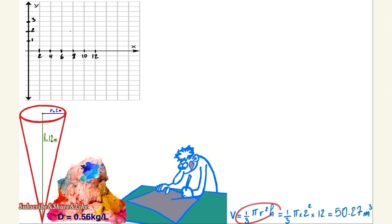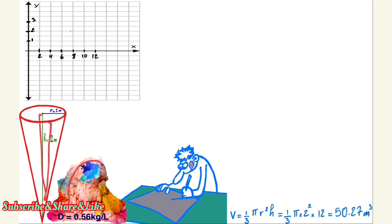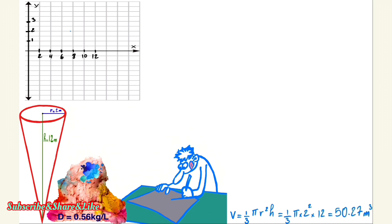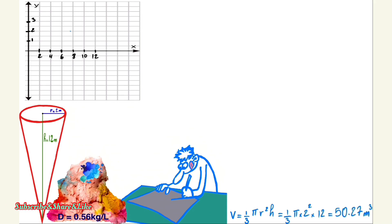First we'll derive the formula from scratch using calculus. Then we'll calculate the volume directly without even applying the formula. When we have the volume of the cone, that equals the volume of the ice cream we fit inside. Then we'll convert the volume to mass using the density formula to find how many kilograms we need — and I'm sure it's a lot.